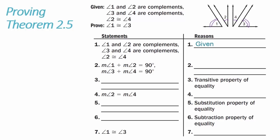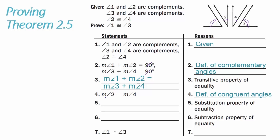When angles are complements, their measures add up to 90 degrees. So the measure of angle 1 plus angle 2 equals 90 degrees, and the measure of angle 3 plus angle 4 equals 90 degrees — that's the definition of complementary angles. Since both equal 90, we use the transitive property of equality to say angle 1 + angle 2 = angle 3 + angle 4. Since angle 2 is congruent to angle 4, their measures are equal — that's the definition of congruent angles.